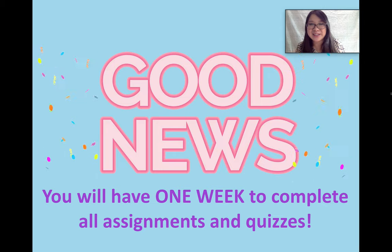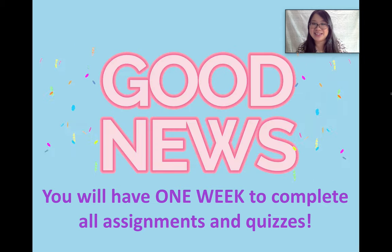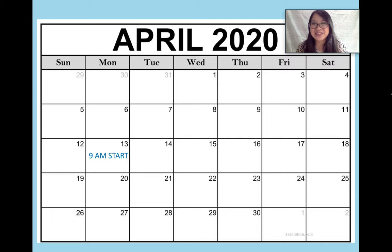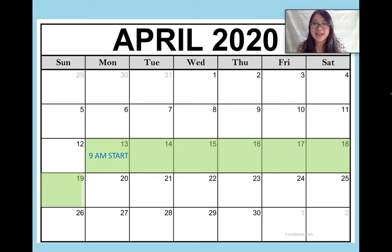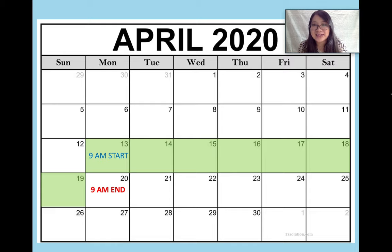Let me explain a little more about this one-week deadline. Let's say for example you have class on Monday and it starts at 9 a.m. The assignment will begin at 9 a.m. at the beginning of your class. Then you will have one complete week — it will end when the next lecture begins, so on the next Monday at 9 a.m. This gives you lots of time to complete your work.